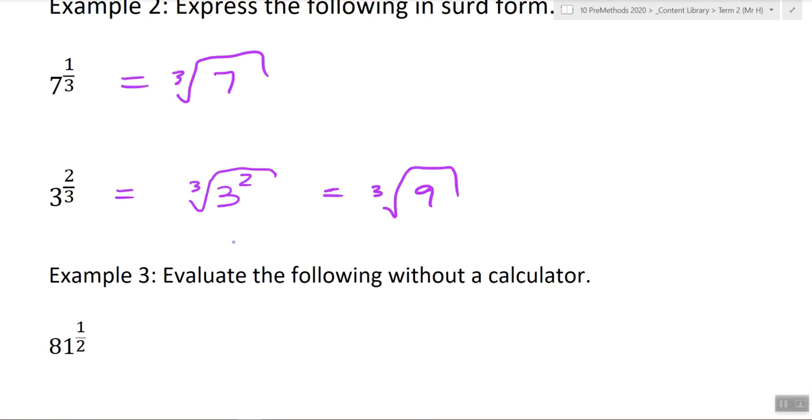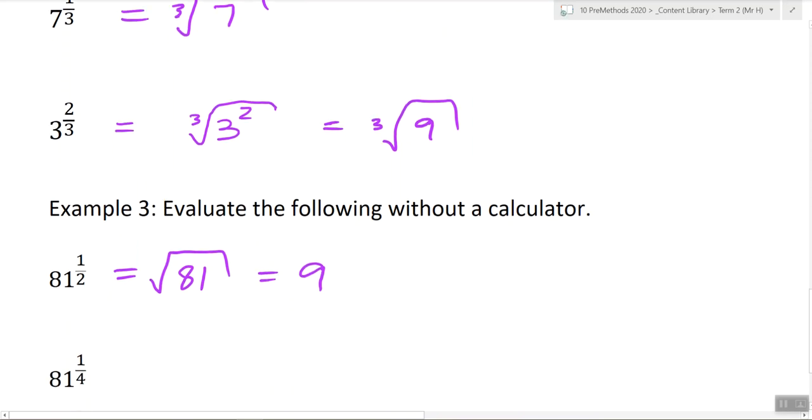Okay, so finding the value 81 to the power of a half. What's that the same as? Square root of 81, which is 9. You don't have to do this step in the middle. I'm just showing you. You can just go straight to 9 if you know how to do that.